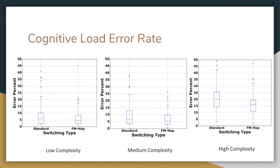We also look at the distribution of error rates for both FMHOP and standard radio users across three complexity levels. The median error rate for low complexity is about 4.44% for FMHOP users versus 6.11% for the control group. For medium complexity it is 5.44% for FMHOP users versus 6.61% for the control group. For high complexity it is about 16.22% for FMHOP users versus 20.22% for the control group. The error rate increases for both groups as complexity increases, but the error rate of FMHOP users is strictly lower than standard radio at all complexity levels.